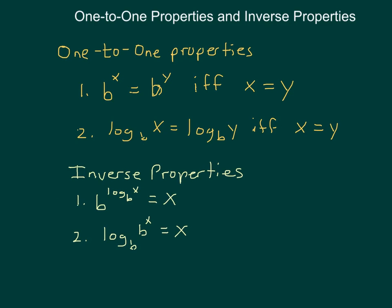We also have the inverse properties discussed in section 3.3. These help us solve equations because when solving an exponential function, I can't solve for the variable while it's part of the exponent — I have to get that variable out of the exponent. Both the one-to-one property and the inverse properties help do that. Similarly, when a variable is inside a log, I can't solve for it until it's out of the log. These properties help us remove it from the log as well.